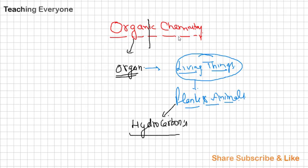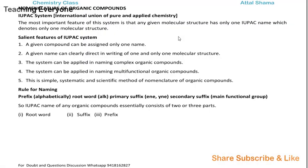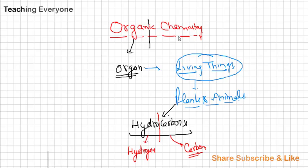And hydrocarbon is again composed of two words: hydrogen and carbon. Now first, here in the nomenclature of organic compounds, we will go through the introduction part of organic compounds first, and then we will move towards the organic nomenclature.